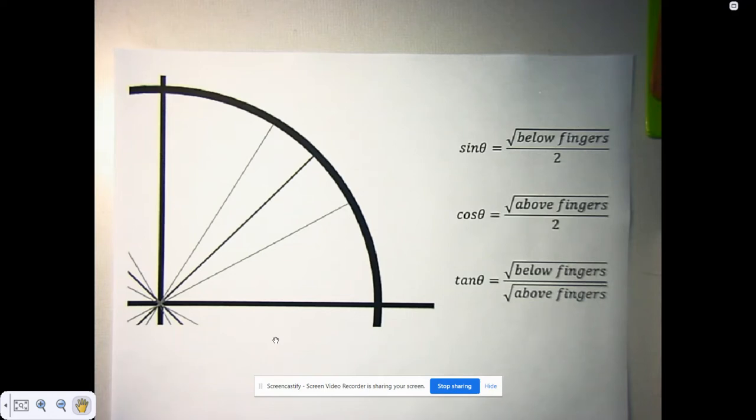Okay, so this is a quick walkthrough of how to use the hand trick for sine, cosine, and tangent, and thus their reciprocals.